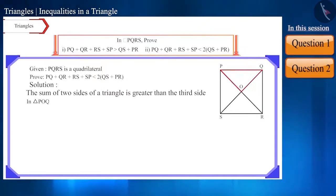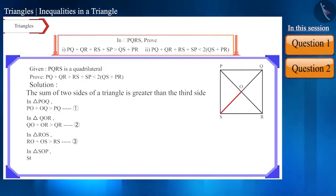Hence, in triangle POQ, the sum of side PO and side OQ is greater than side PQ. Similarly, in triangle QOR, the sum of side QO and side OR is greater than side QR. In triangle ROS, the sum of side RO and side OS is greater than side RS. In triangle SOP, the sum of side SO and side OP is greater than side SP.